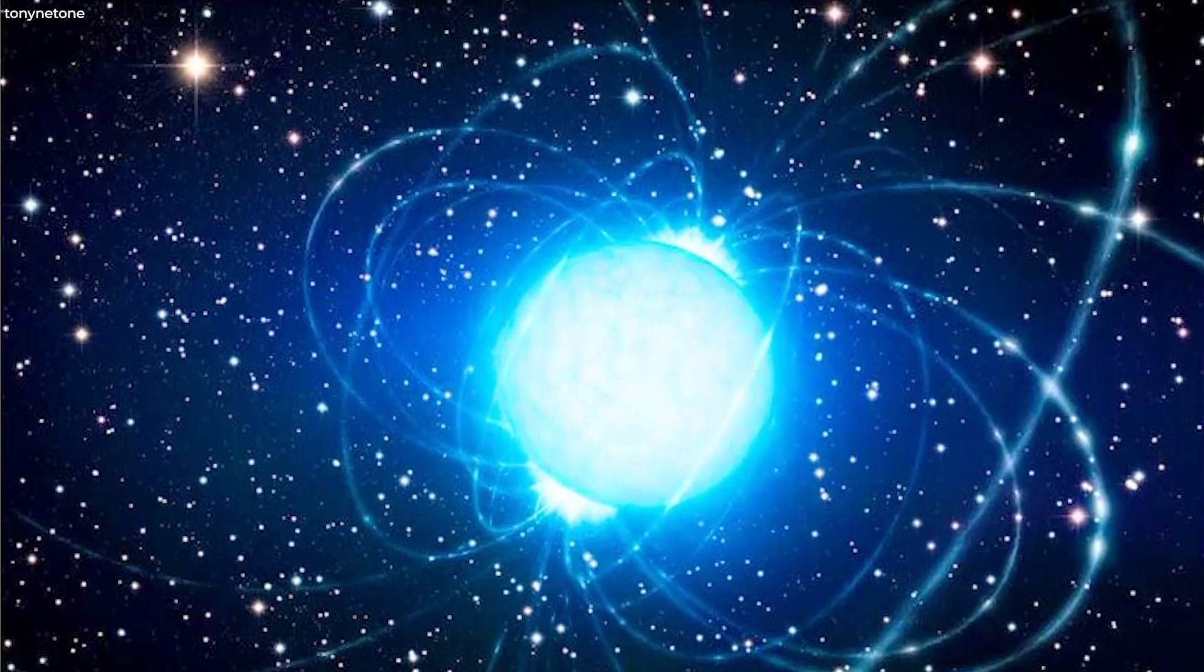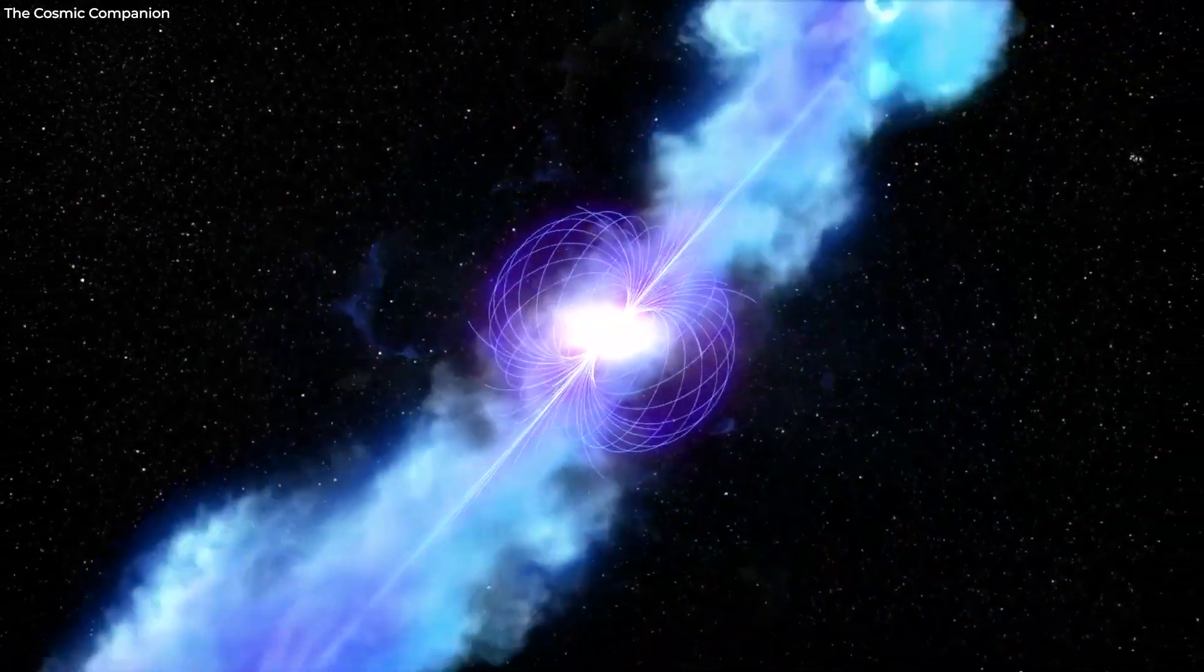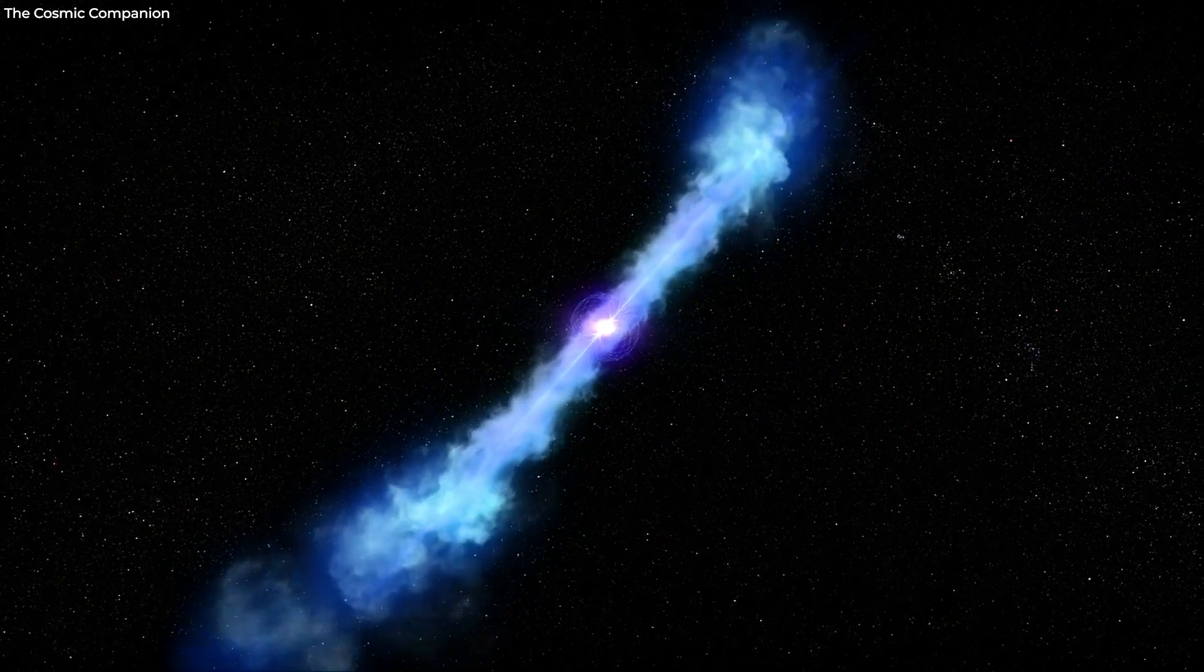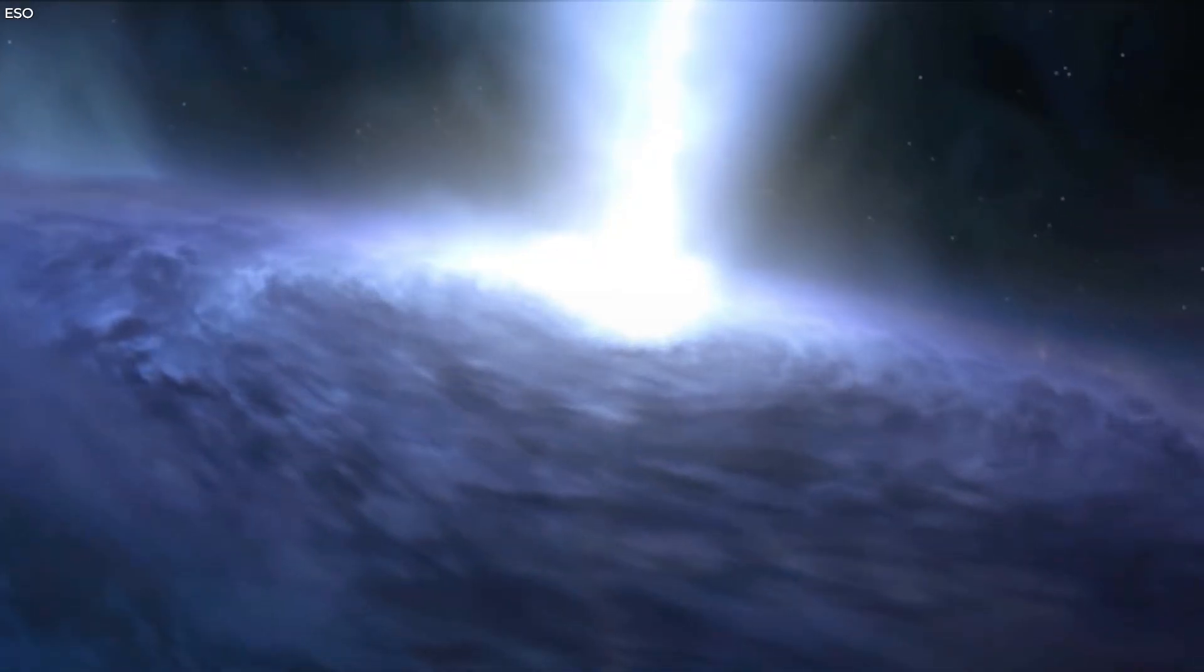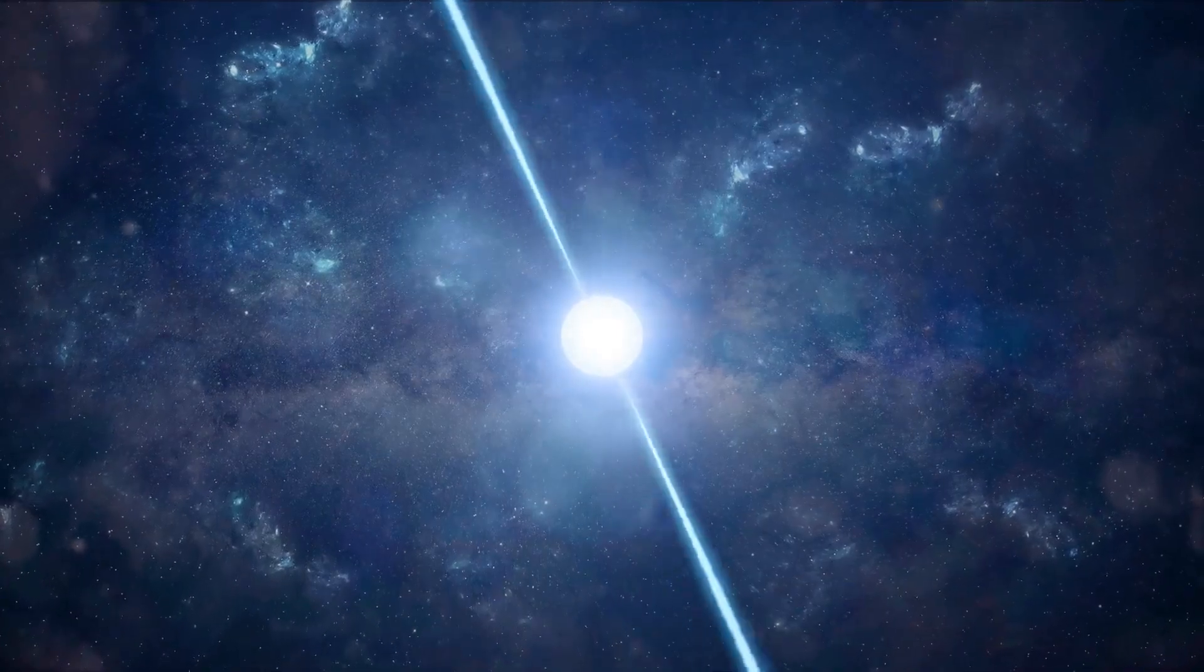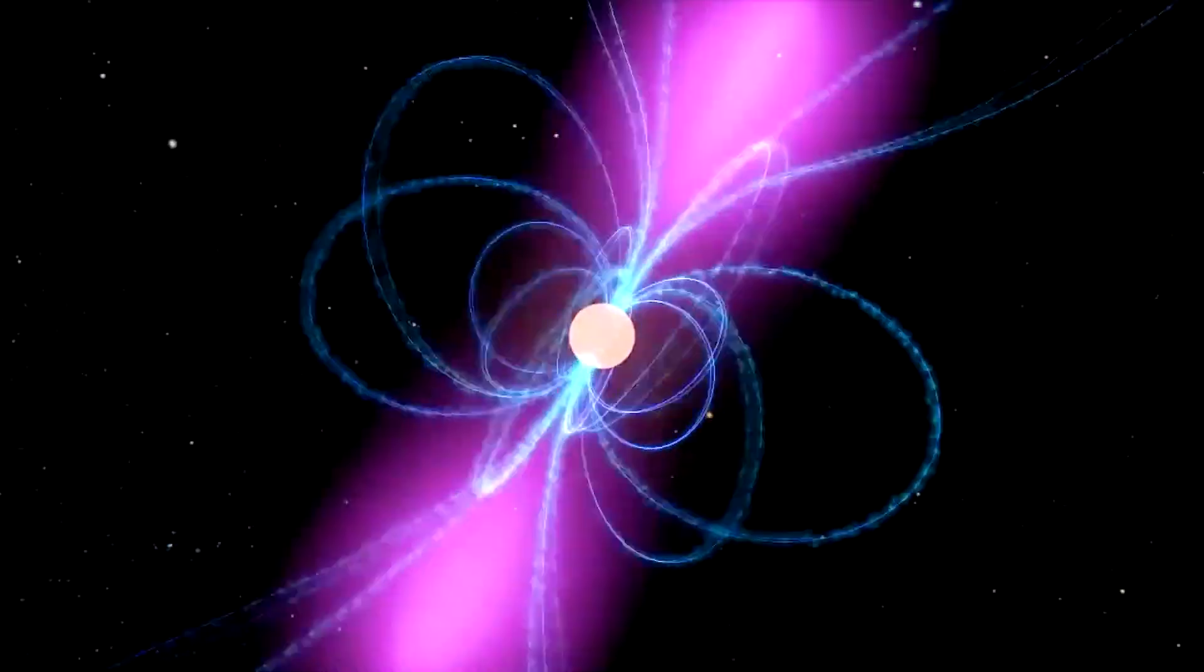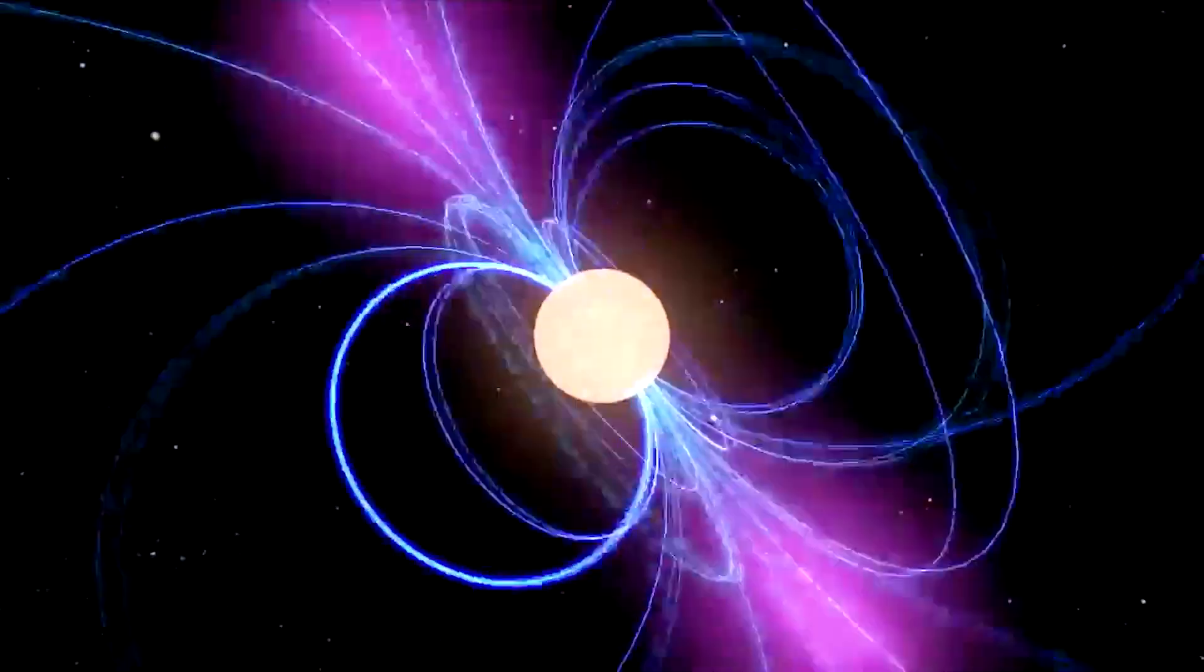Strong magnetic fields seen in pulsars cause jets of particles to be directed towards each of the two magnetic poles. Strong light beams are produced by these accelerated particles. These particle and light beams are swept around as the star rotates because the magnetic field is frequently out of alignment with the spin axis.